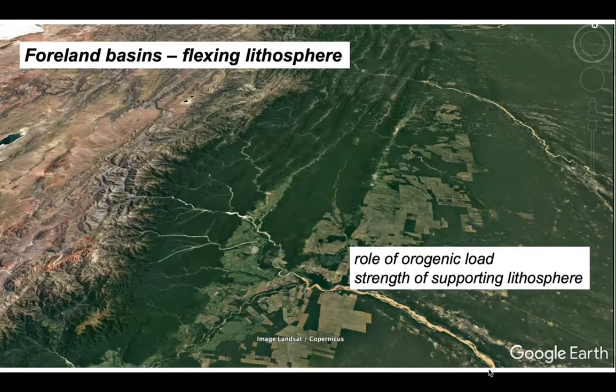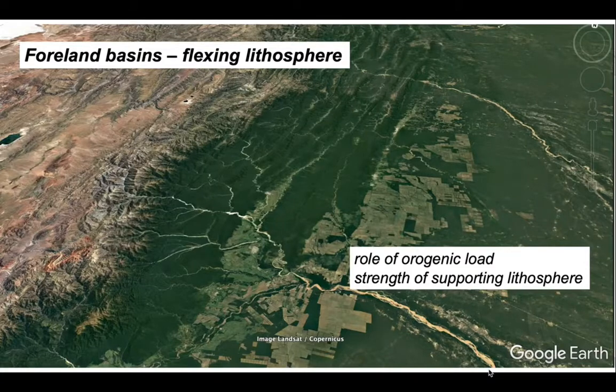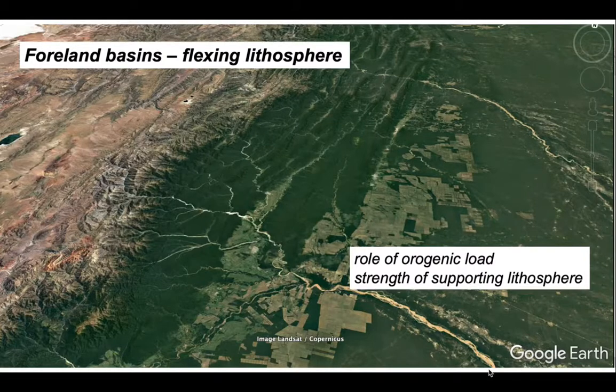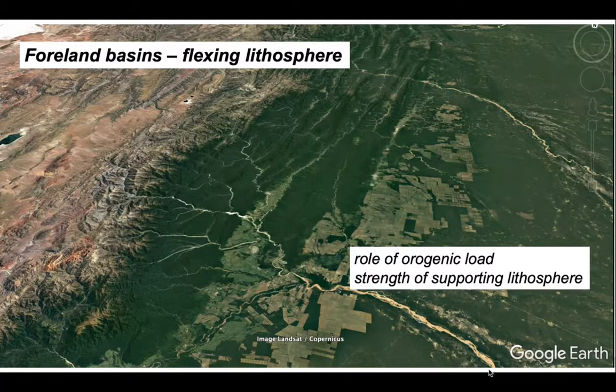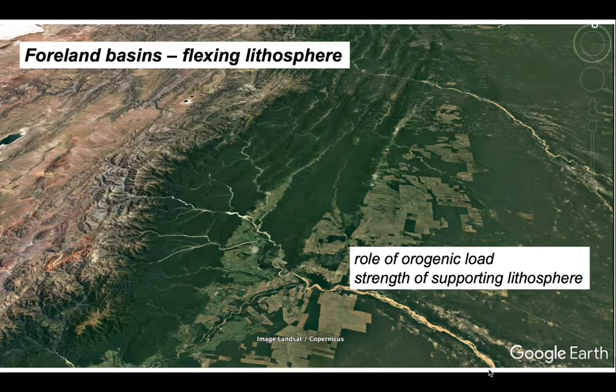So that's a quick tour of the large scale stratigraphic expression and some of the dynamics behind foreland basins. We've looked at the role of the orogenic load and the strength of the supporting lithosphere in controlling the overall form of foreland basins. To take this further, we'd need to look at how the thrust belt that lies at the side of the advancing orogenic load cannibalizes the foreland basin fill, as well as providing local sites to pond sediment and provide local depositional environments. But that's for a different video.